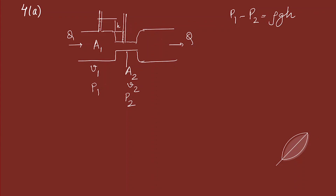The pressure difference p1 minus p2 equals rho times g times h, where h is the height difference in the manometer. Since we have a constant flow rate, we can write v1·a1 = v2·a2 by continuity. Now applying Bernoulli's principle to the two sections.